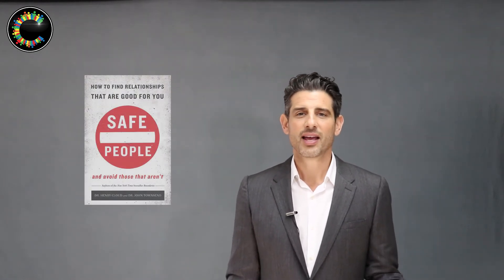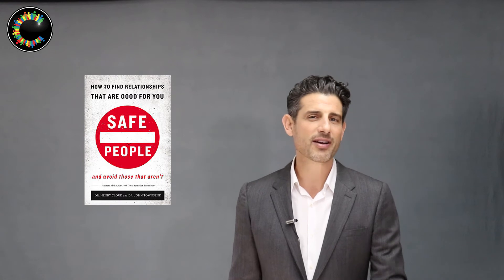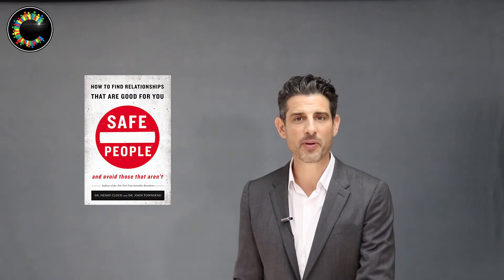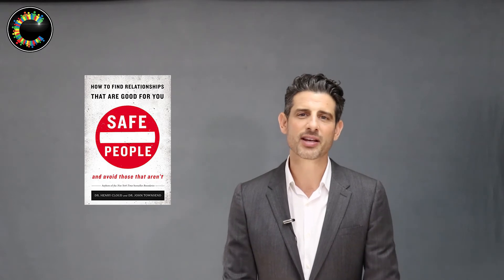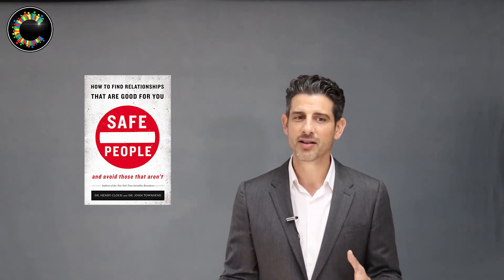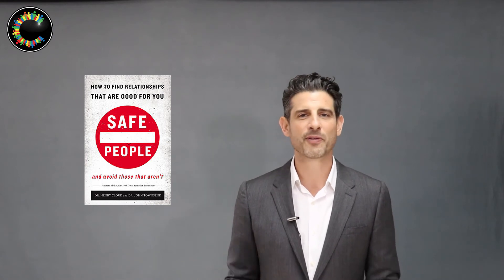The next book is Safe Code. It's about how to choose people that are safe in your life, how to hire safe people versus unsafe people. It's written by two psychiatrists. It's pretty interesting and shed a lot of light on things I didn't recognize before.